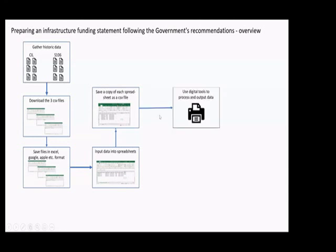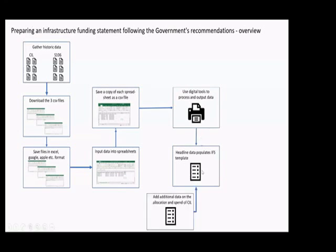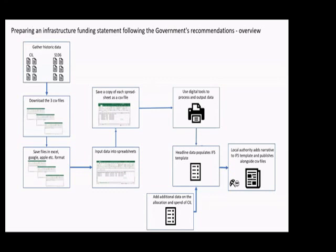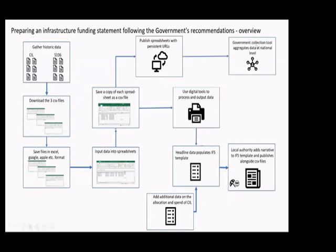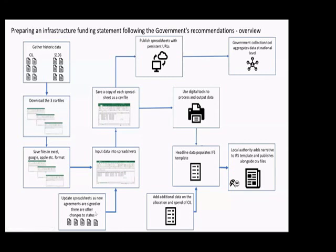You can use this data with digital tools which process and extract the headline information you need to populate your infrastructure funding statements. This will go into a template. You'll need to add separately a lot of the data on SIL, and you then use that to produce your infrastructure funding statement, alongside narrative and possibly photographs explaining the numbers. At the same time, you publish your infrastructure funding statement, and we ask that you publish your CSV files on your website with a persistent web address. This allows the government, using a collection tool we're developing, to aggregate all the data to give a national picture. Importantly, every time you get a new Section 106 or SIL demand notice, keep your spreadsheets up to date.